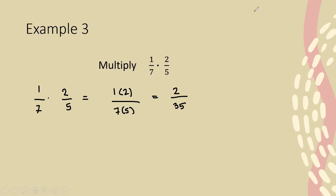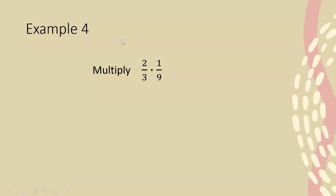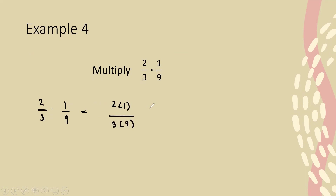Easy right? Let's continue to our final example. We're asked to multiply 2/3 times 1/9. I'm going to rewrite it: 2/3 times 1/9. I multiply my numerators together — the numbers on top — so 2 times 1, and my denominators together: 3 times 9. So 2 times 1 gives me 2, and 3 times 9 gives me 27. And that is how I multiplied those two fractions.